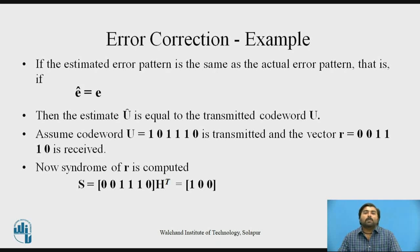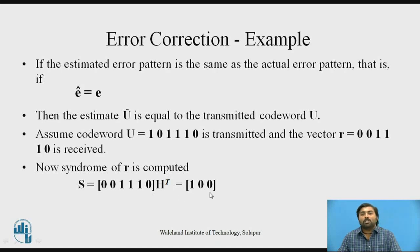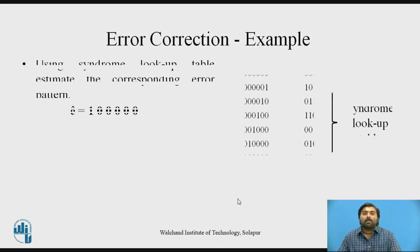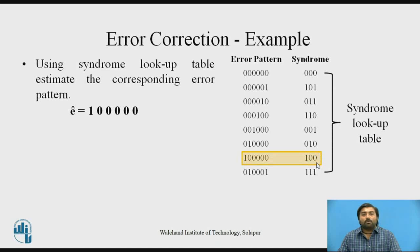For example, assume the transmitted codeword U = 101110 and the received vector R = 001110, meaning an error occurred in the first bit (transmitted as 1, received as 0). Calculate the syndrome S = R × H^T. After multiplication, you get syndrome 1 0 0. Using the syndrome lookup table and looking up 1 0 0, you get the estimated error pattern Ê = 100000.